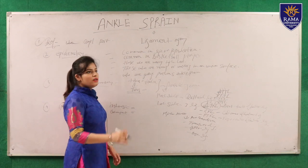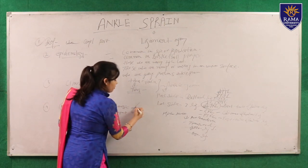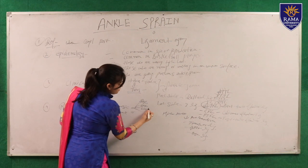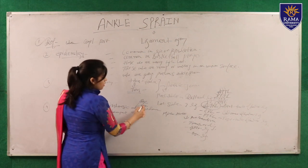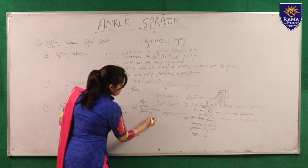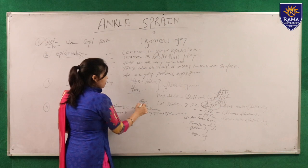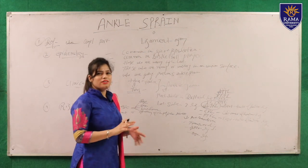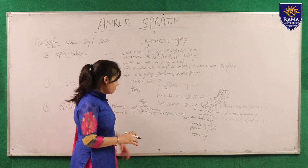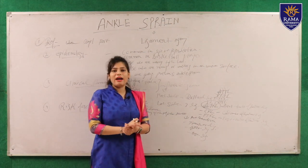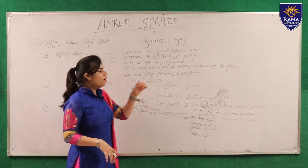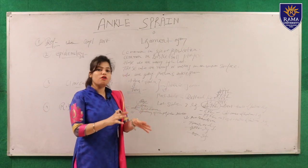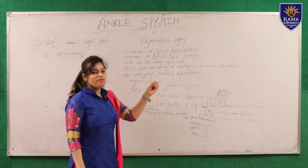In the intrinsic risk factors, the common points are age, sex, limb dominance, and anatomy. Regarding age, ankle sprain is most common in adults aged 18 to 25. In this stage, most athletes are playing high-impedance sports, making ankle sprain more likely.